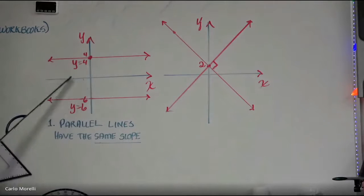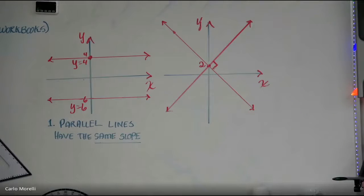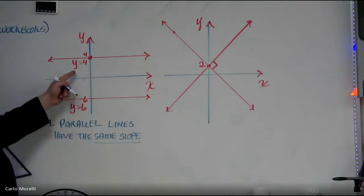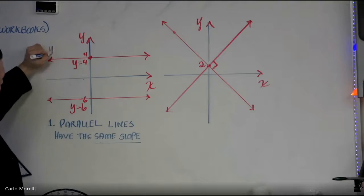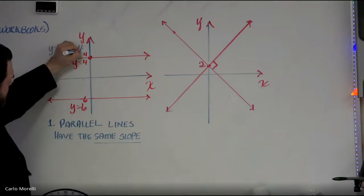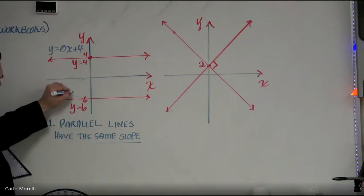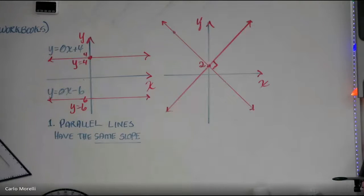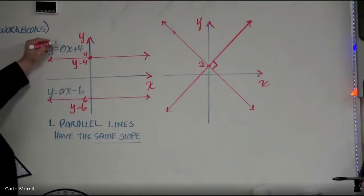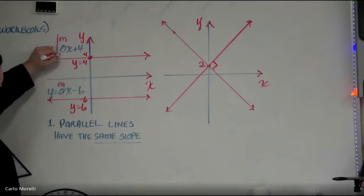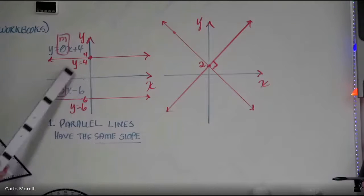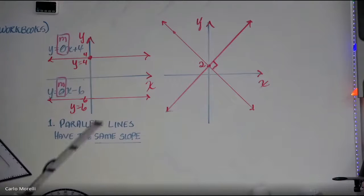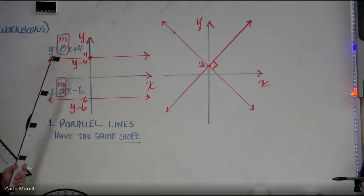In this example, what is the slope of these two red lines? Parallel lines — it rhymes with hero — zero. The full equation is Y equals zero X plus four, and down here the full equation is Y equals zero X minus six. The key thing about parallel lines is that the slope M is the same. The real easy way to know if it's parallel is you check that slope — if the slope is the same, it's a parallel line.